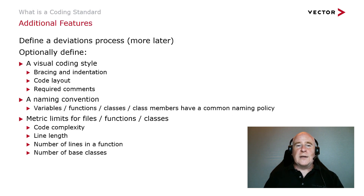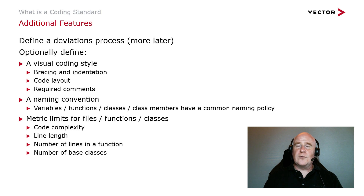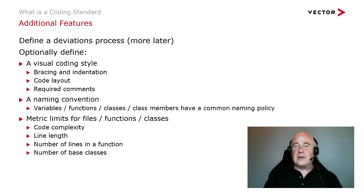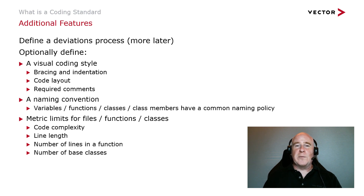We may also define a deviations process, which we'll talk about more in the enforcement section. We may also define some visual coding standard rules for how code should be laid out, a naming convention to mandate how variables, classes, and so on are named. And we may also employ some metric limits to perhaps limit the complexity of functions, which will help us later when we come to do dynamic testing of our code.